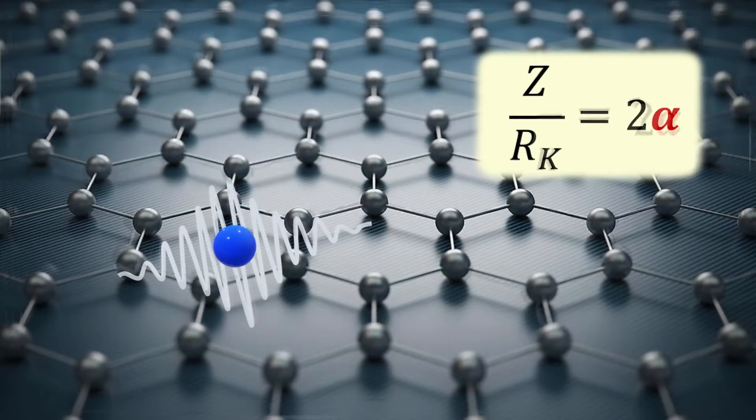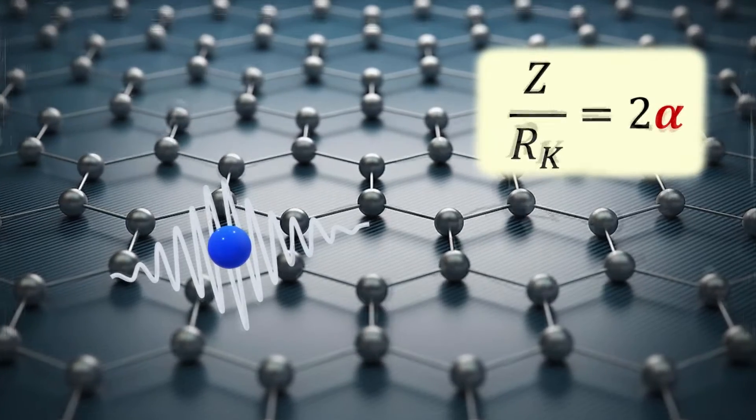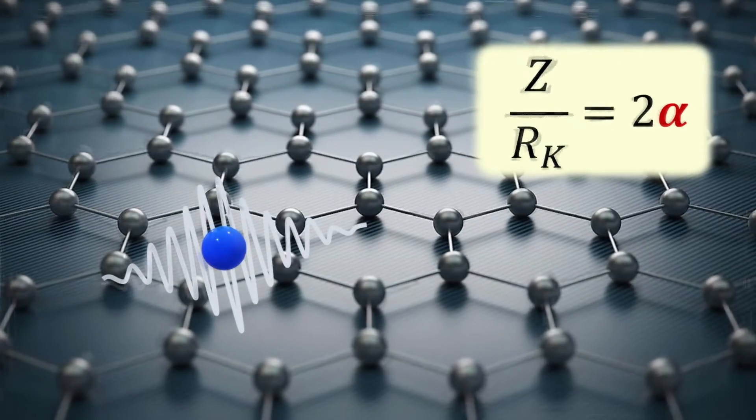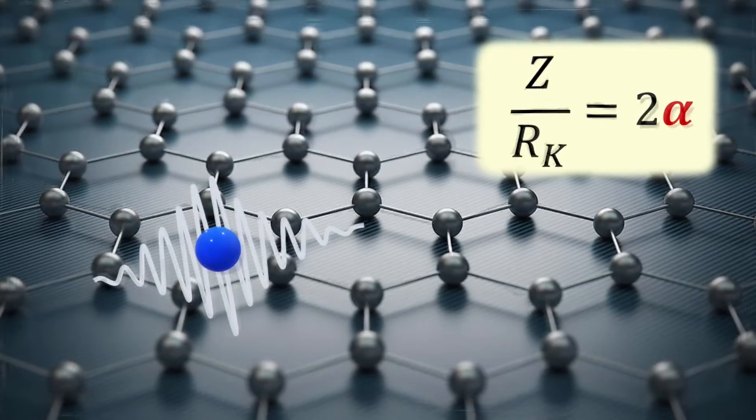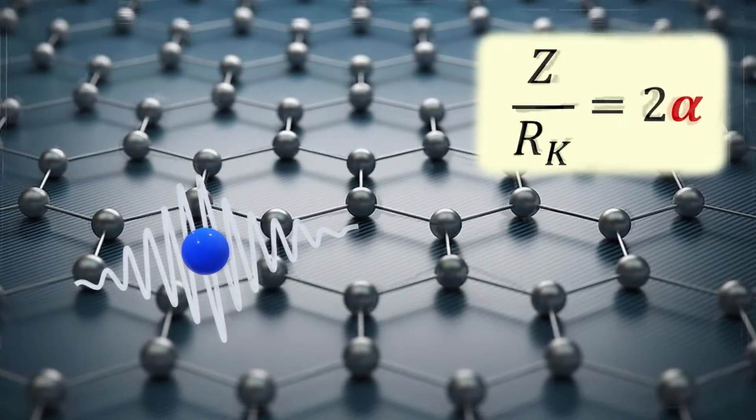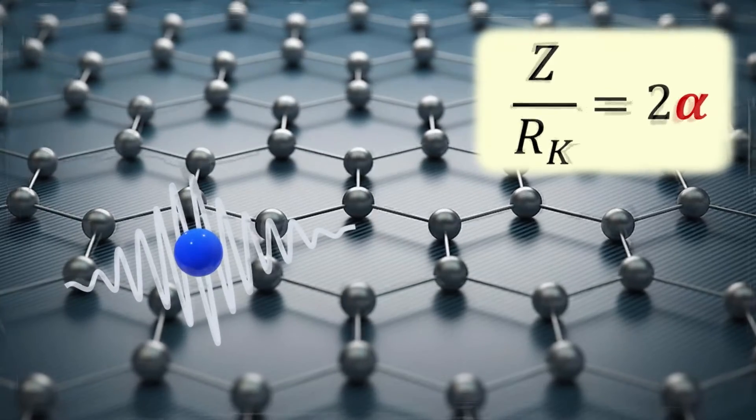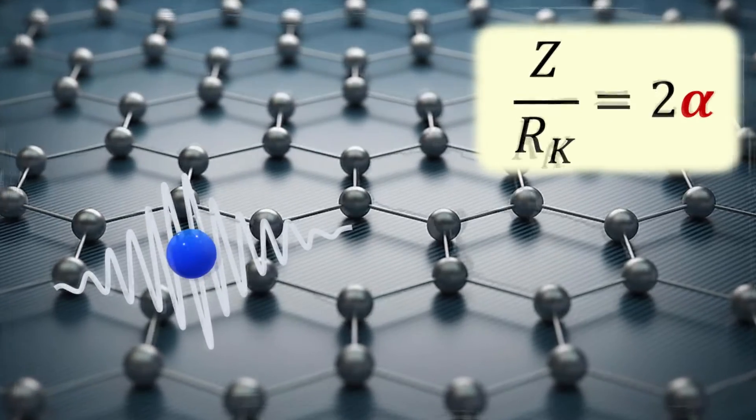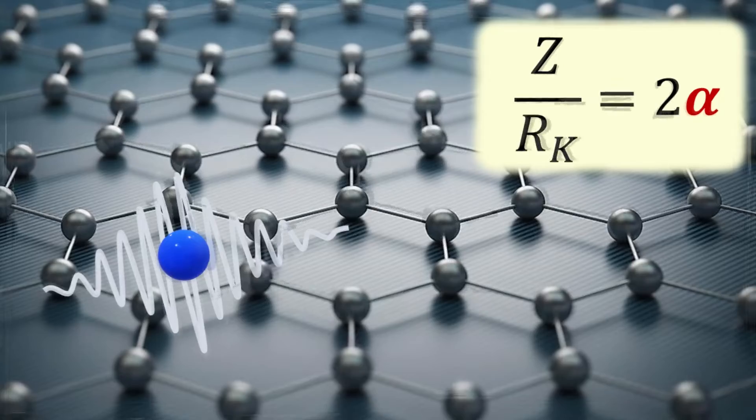Beyond the subatomic physics, the fine structure constant also appears in the field of electrical engineering and solid state physics. It governs the ratio of the characteristic impedance of electromagnetic waves in free space, Z, to the von Klitzing quantum electrical resistance, RK.